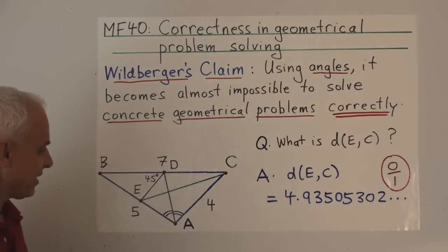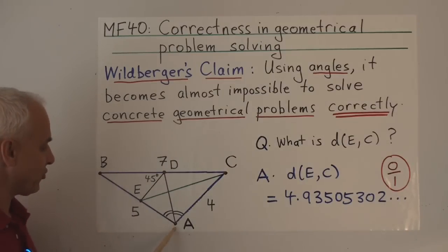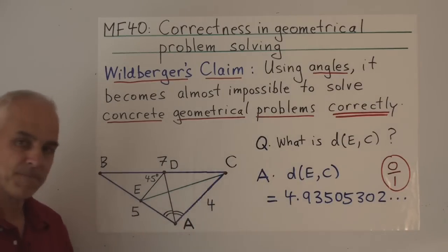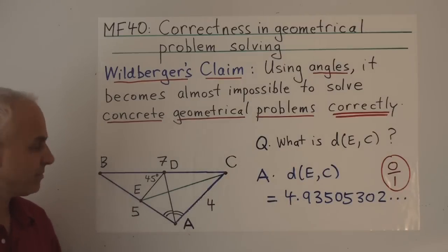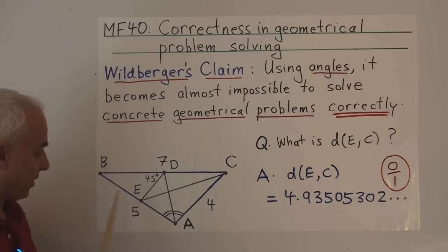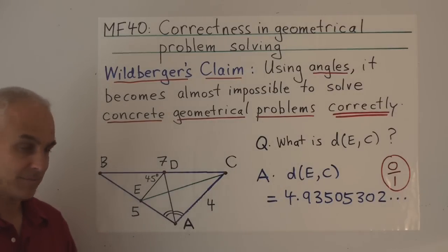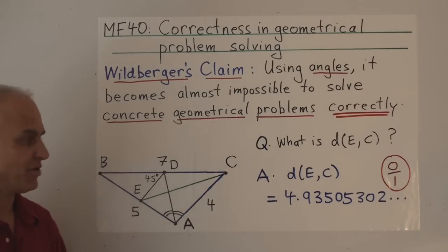So let's talk about this through the example I gave last time. We had a triangle ABC with sides five, seven, and four. We construct an angle bisector so these two angles are equal, creating a point D on one side. Then we go at an angle of 45 degrees from D to a point E on the other side. What is the distance between E and C? It's a rather random triangle and a somewhat arbitrary problem.